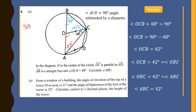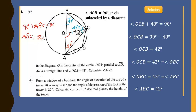With the base angles summing to 96 degrees, we add this to angle AOC to get 180 degrees, since angles in a triangle sum to 180. Solving for angle AOC: angle AOC equals 180 minus 96, which gives us 84 degrees.